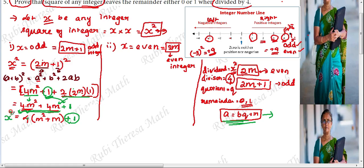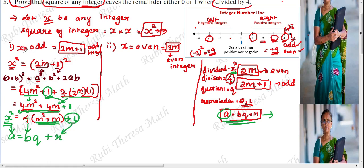Comparing with the statement a = bq + r: x squared is the dividend (a), 4 is the divisor (b), (m² + m) is the quotient (q), and 1 is the remainder (r). So when x is an odd integer, the square of x when divided by 4 leaves a remainder of 1.